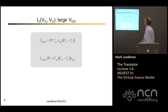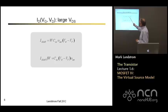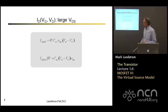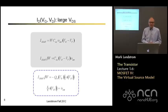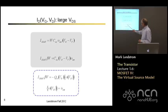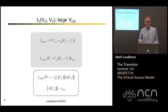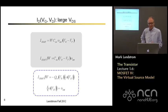Now let's look at large drain voltage. Our saturated current expression looks like this. We can rewrite that as the current per unit width — bring the Cox(VG minus VT) out front because that's the charge, and then we have Vsat. So again, current per unit width equals charge times average velocity, and the average velocity in this case is just the high field saturated velocity in this traditional model.